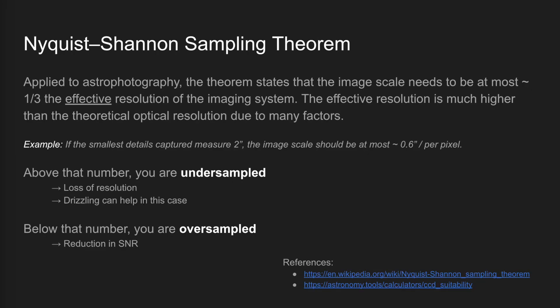To help answer that question, let's briefly review the Nyquist-Shannon sampling theorem, which when applied to imaging in two dimensions states that the image scale should be, at most, about a third of the effective resolution of the imaging system. So for example, if the smallest details you can reasonably hope to resolve measure two arc seconds, your image scale should be at most about 0.6 or 0.7 arc seconds per pixel. If your image scale is higher than that, you are what's called undersampled, which means you lose some resolving power, and a technique known as drizzling might be able to help.